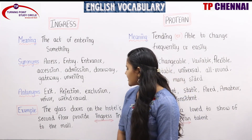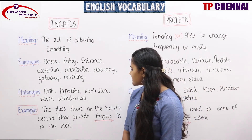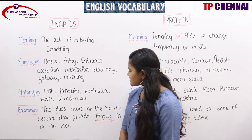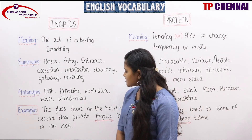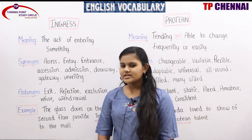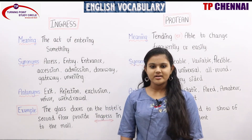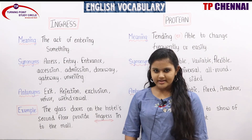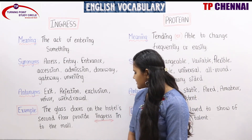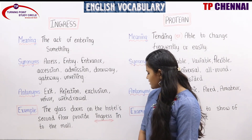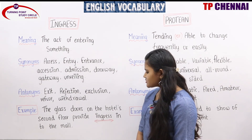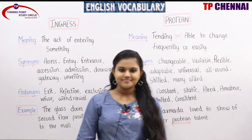Antonyms: exit, rejection, exclusion, refuse, withdrawal. All these words can be related to antonyms. Example: The glass doors on the hotel's second floor provide ingress into the mall.